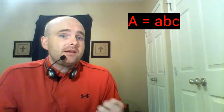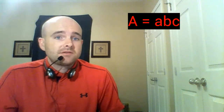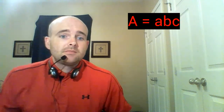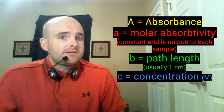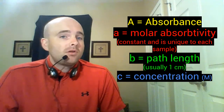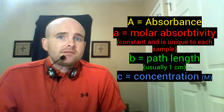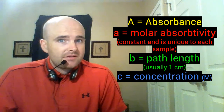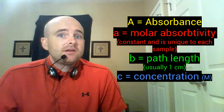The Beer-Lambert law is written as capital A equals little a times little b times little c. Capital A stands for absorbance of light. Little a stands for molar absorptivity. B stands for the path length, and C stands for the concentration in molarity.